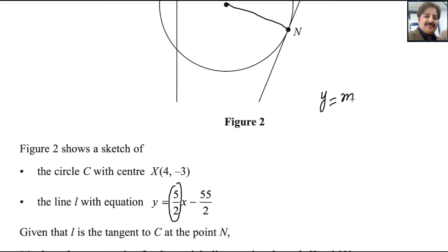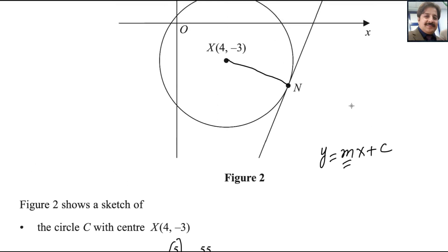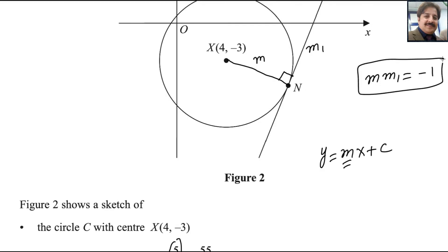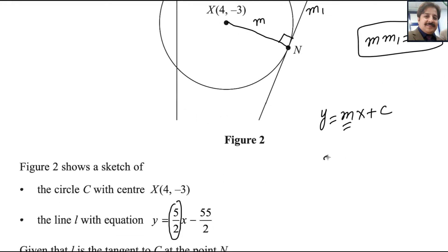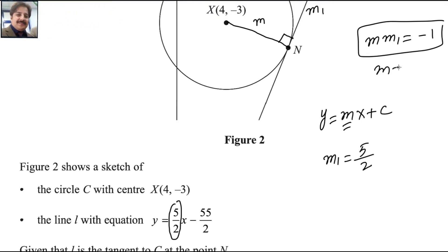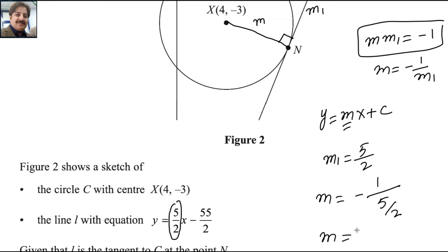We know the equation of the line is y equals mx plus c, where m is the gradient. So the gradient of line L is 5 over 2. We know that XN is perpendicular to this line. If two lines are perpendicular and their slopes are m and m1, the product of these two gradients always equals negative 1. So gradient m1 is 5 over 2, and m equals negative 1 over m1, which is the negative reciprocal. So the line XN has gradient negative 2 over 5.